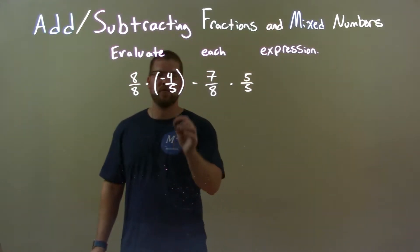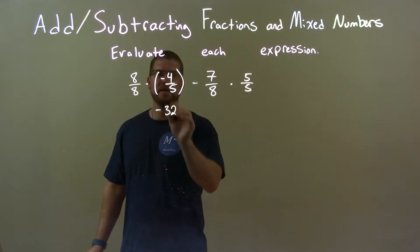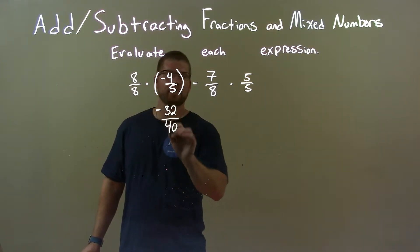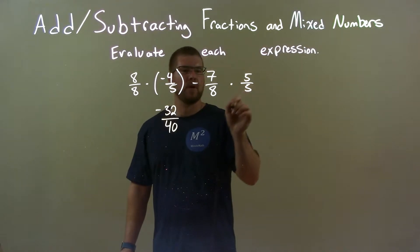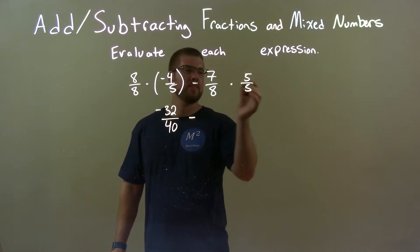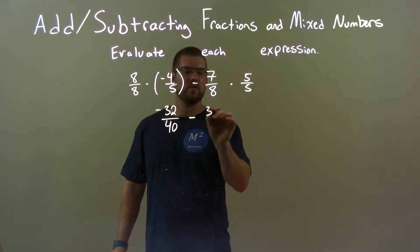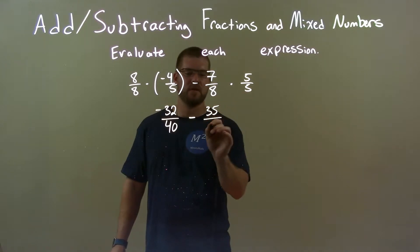Eight times negative four is negative 32, and eight times five is 40. Now we have the right side, our subtraction here. Five times seven is 35, and eight times five is 40.